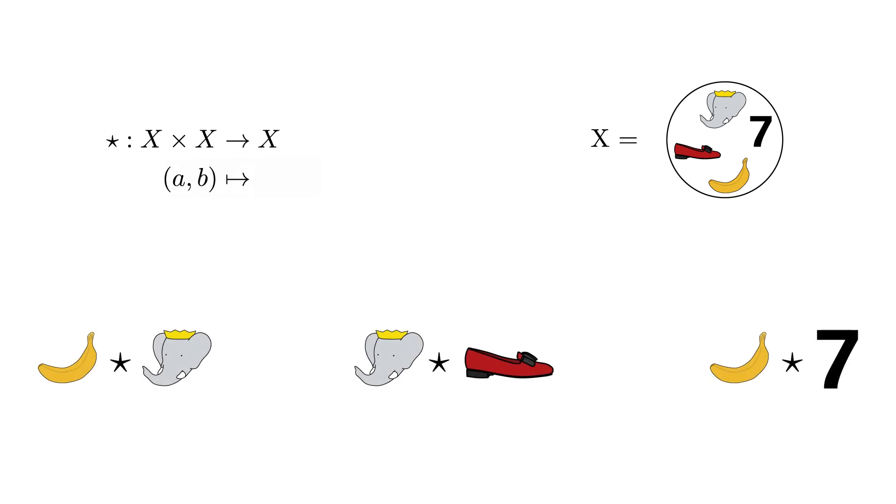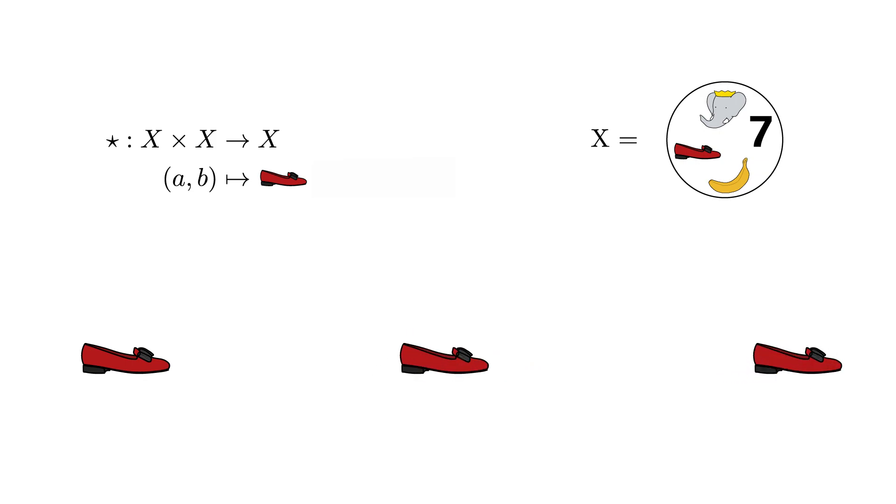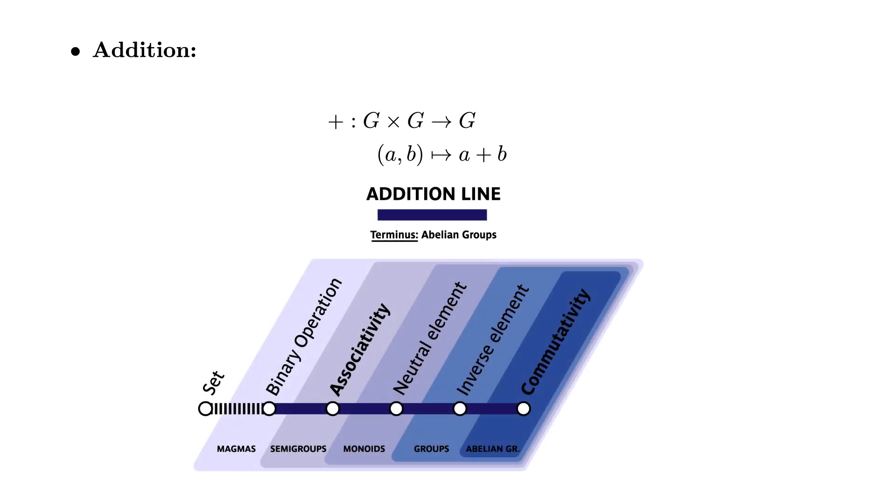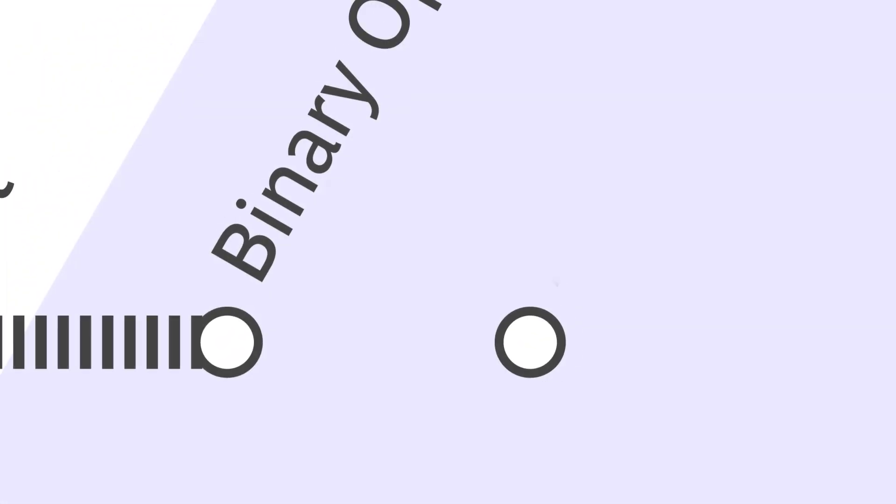A magma is a set with a well-defined binary operation. Note that nothing is required of a binary operation so that there are lots of them. For instance, we could send any two elements to our favorite element in X. In fact, any definition is allowed. But in order to reach the field, there is only one way you can go. We will call this binary operation the addition, whose terminus station will be in the territory of abelian groups.